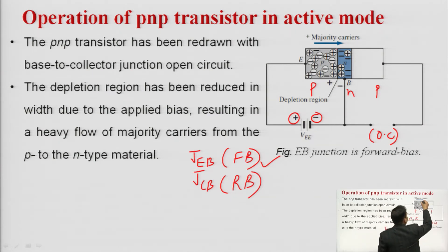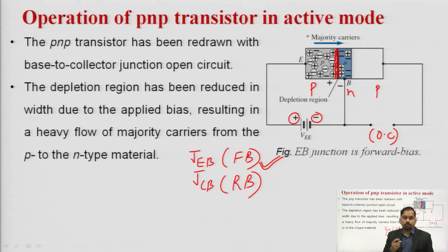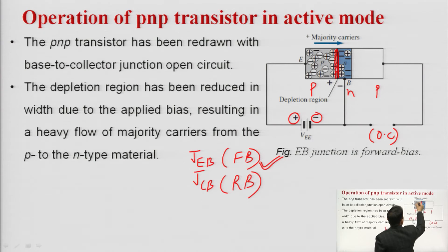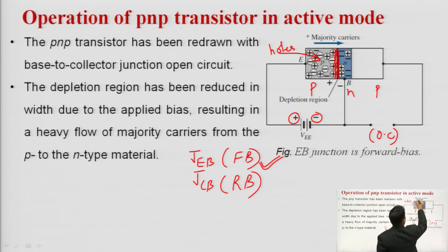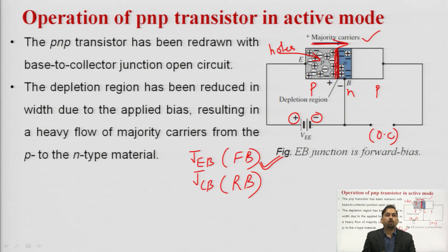During forward bias, the depletion region near the emitter-base junction becomes very narrow. The positive terminal of the battery pressurizes the majority charge carriers — holes in the P region — causing them to move toward the base. The direction of current is the same as the direction of hole movement. This is the contribution of holes during the forward bias condition.